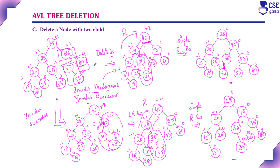Deleting a node with two children is the complicated case. The deleted node is replaced by either the in-order predecessor — the largest element in the left subtree — or the in-order successor — the smallest element in the right subtree. All three cases have been discussed with examples. In the next session, we will discuss one more example implementing deletion with all three cases.